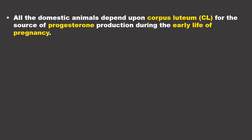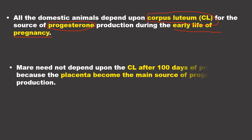Almost all domestic animals need progesterone, with the corpus luteum as the source for progesterone production. In early pregnancy, most domestic animals depend on the corpus luteum. However, in mares, after 100 days of pregnancy, they no longer need to depend upon the corpus luteum, because the placenta is able to produce a sufficient amount of progesterone for the maintenance of pregnancy.